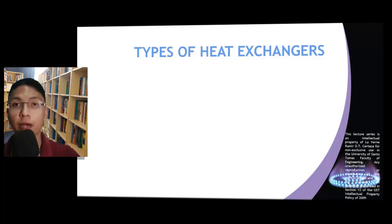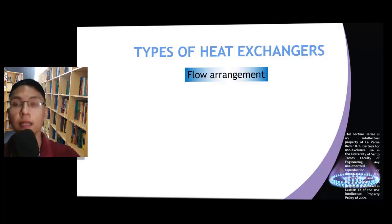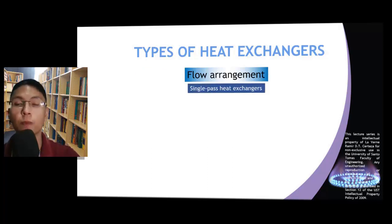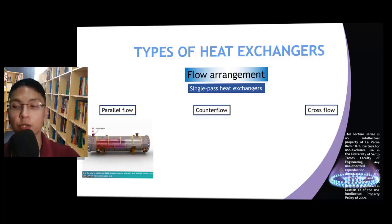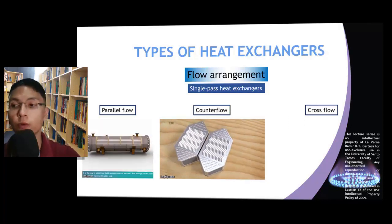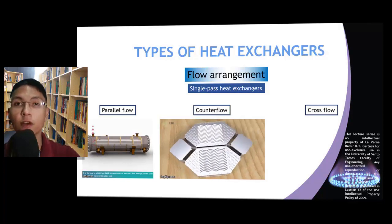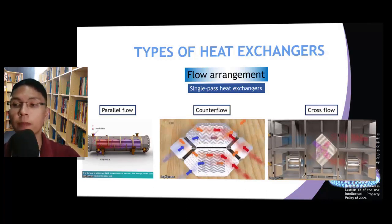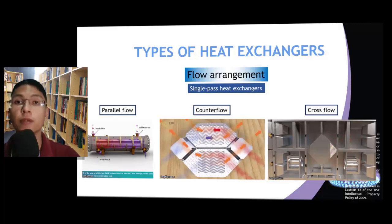The next criterion by which we can categorize heat exchangers is related to how the heat transfer fluids flow inside them. Heat exchangers can be classified as either single-pass or multi-pass. Single-pass heat exchangers can be further categorized into parallel flow, counter flow, or cross flow. In parallel flow, the hot and cold fluids enter and exit at the same side. In counter flow, they enter and exit at opposite sides. In cross flow, the hot and cold fluids flow perpendicularly to each other — a common example is the radiator of a car.